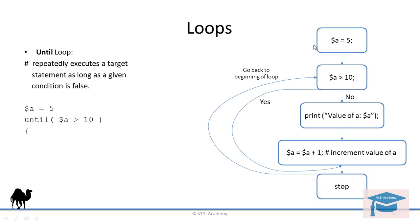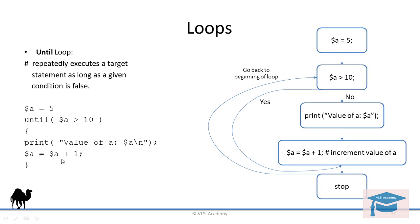Let's say you have a variable with value 5. The condition is: if this variable is greater than 10, it will exit out. But if it is false, it will enter inside — 5 is greater than 10? No, it is false, so it enters, prints the value of a, and increments it to 6. 6 is greater than 10? No, again false, so it goes inside again. It keeps doing this, and when it reaches 11, 11 is greater than 10 is true, so it exits. The output of this code will be 5, 6, 7, 8, 9, and 10. This is how we declare the until loop.